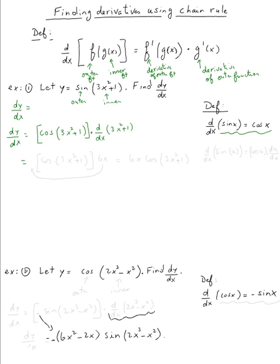This is going to be pretty easy. This is cosine of three x squared plus one, times the derivative with respect to x of three x squared plus one, which is six x. We can rewrite this by moving the six x to the front.